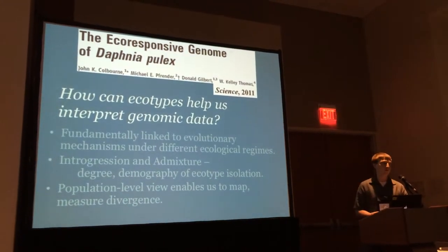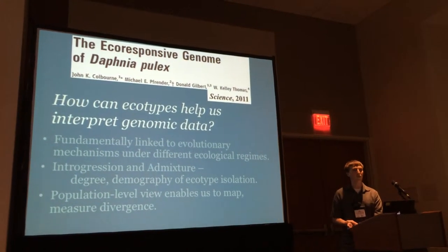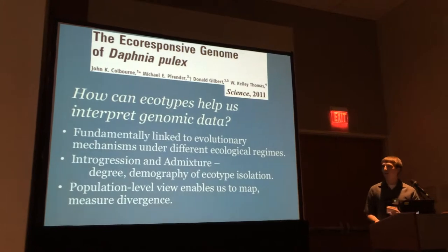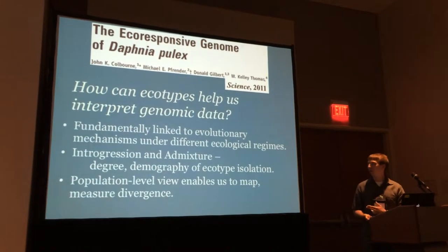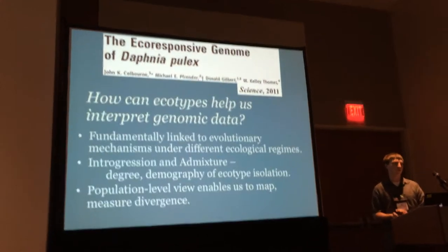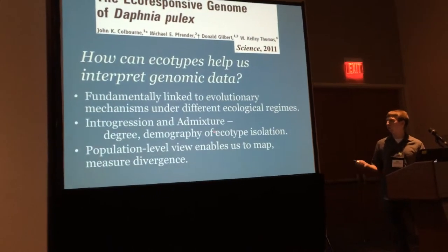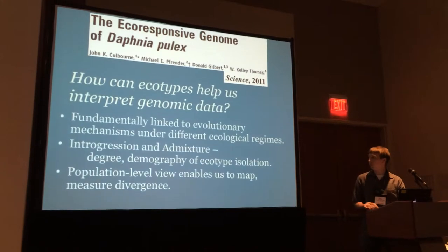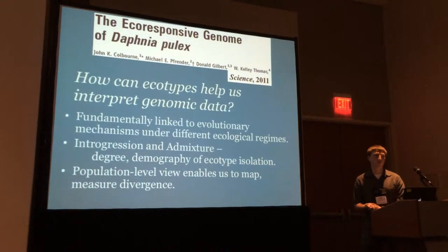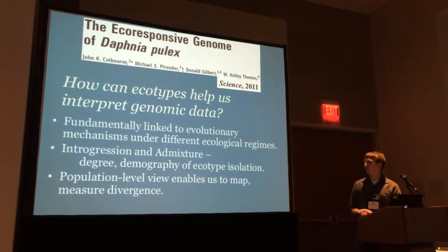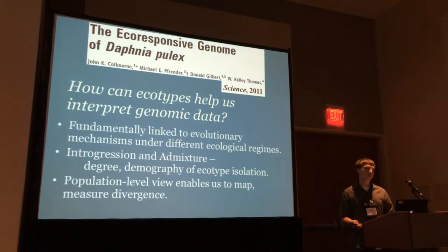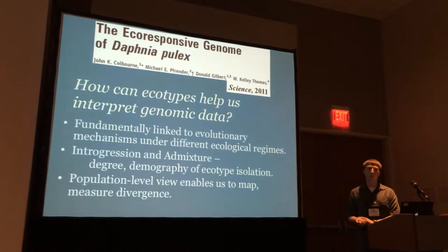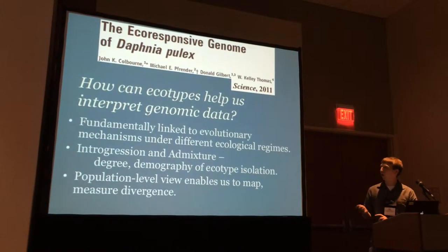My main contention is that beginning with the focus of ecotypes within these new genomes is a great way to begin interpreting new genomic data, for fundamentally three reasons. Primarily, they are linked inextricably to evolutionary mechanisms separating populations under real-world differential ecological regimes. If there are admixed taxa between ecotype species, measuring introgression and admixture between the two can tell you about the degree and demography of isolation between the parent ecotypes. And also, taking a population-level view enables you to map and measure divergence — and that's what I'm doing today.